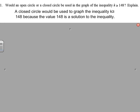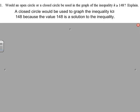Number one: would an open circle or closed circle be used in the graph of the inequality K is greater than or equal to 148? Explain. Because we have the greater than or equal to symbol, we would use a closed circle. The reason is because 148 is a solution to the inequality.